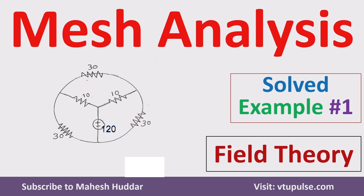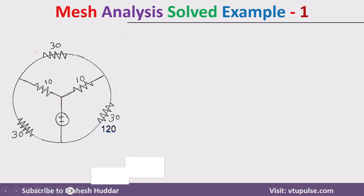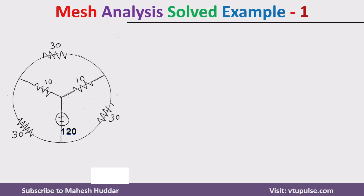Today we will solve problems using mesh analysis. To solve the problem using mesh analysis, first we need to consider the circuit, and for that particular circuit we need to assign the current. In this problem we have three loops: the first one, the second one, and the third one. For these three loops we need to assign the current.